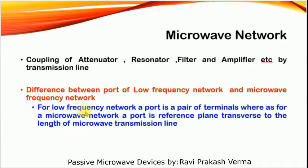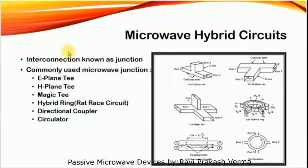From this slide, for a low frequency network a port is a pair of terminals, whereas for a microwave network a port is a reference plane transverse to the length of the microwave transmission line. When two or more microwave devices are connected, it is known as a junction. Commonly used junctions covered in this lecture include E-plane T, H-plane T, magic tee, hybrid ring, and directional coupler, as shown in the figures on the right side of this slide.